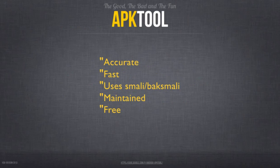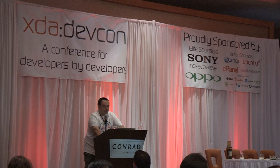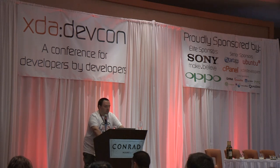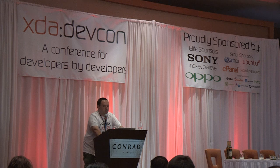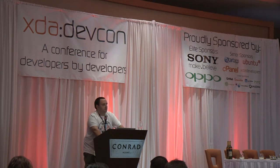The next one is APKTool — Connor out there does a lot of work on it. From the site: it's a tool for reverse engineering third-party closed Android binaries. It can decode resources to a nearly original form and rebuild them after making modifications. It also makes working with APKs easier because of project-like file structures and automation of repetitive tasks like building applications. APKTool is probably the most used tool for reverse engineering Android applications. It packs a resource decoder and encoder with smali, and it's a pretty easy-to-use front-end script.